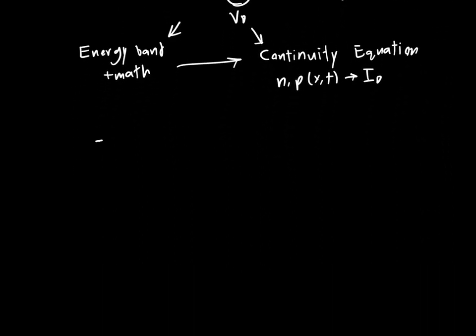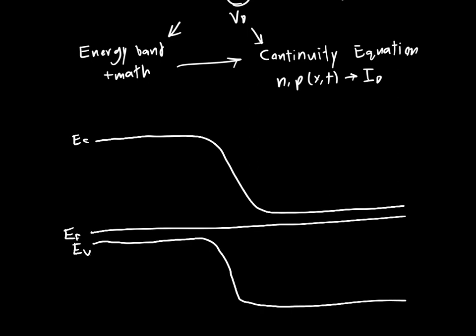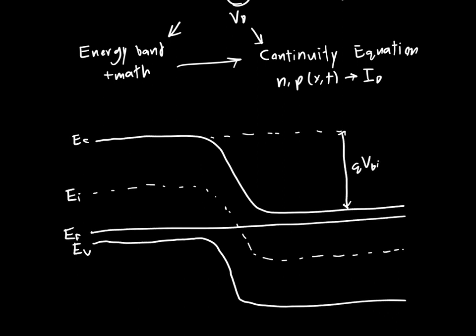We'll start with the energy band model. If we draw just the PN junction energy band diagram, it looks something like this: we've got our conduction band, our Fermi level which at equilibrium is flat — this is very important — and then we've got our valence band, as well as the intrinsic Fermi energy, which gives an easier way to reference things and a more limited set of equations to use. The voltage or energy potential barrier is called VBI, or the built-in potential barrier. This is our complete PN junction band diagram.